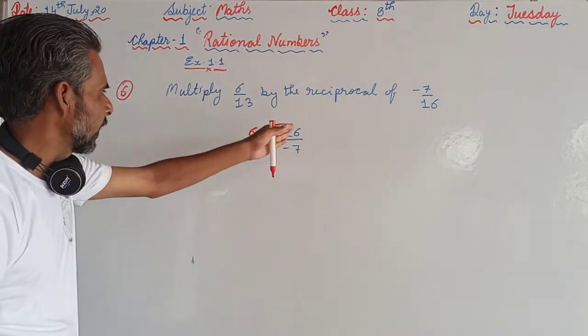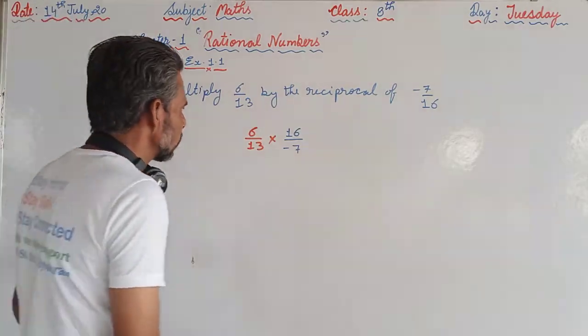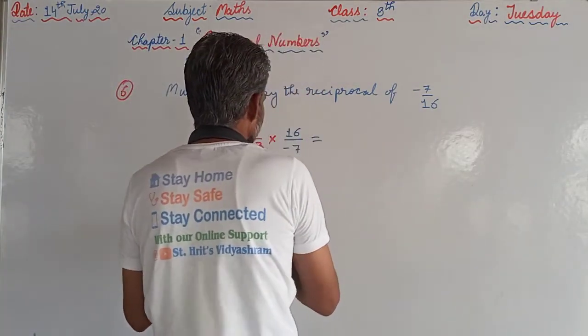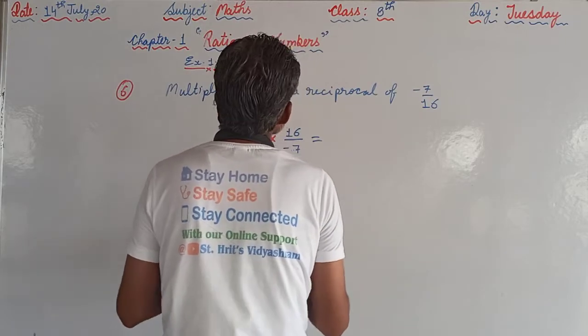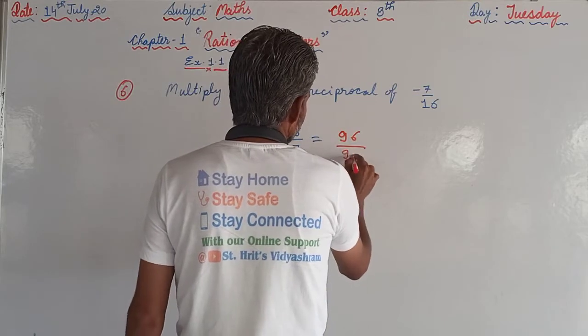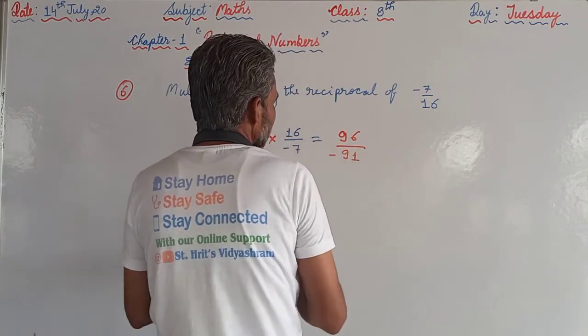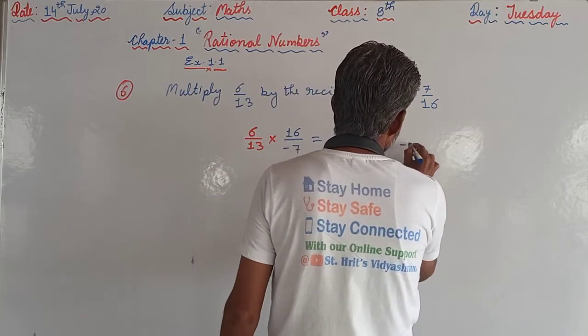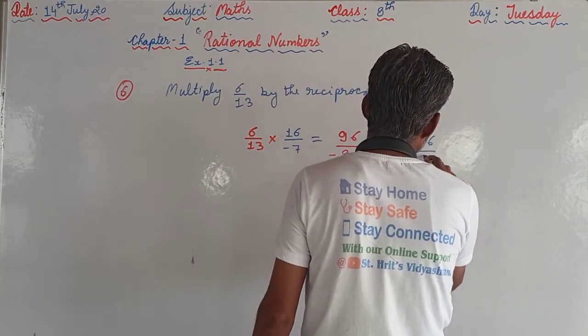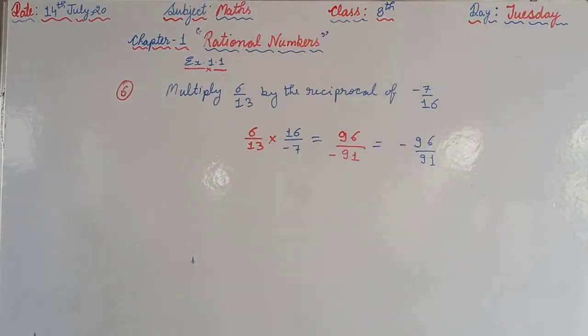Now if we see that anything can be cancelled out, then we can cancel, otherwise no. So this will be 96 upon 91. Negative times is here. We write it here and this can be equal to minus 96 upon 91. In this way we are supposed to proceed.